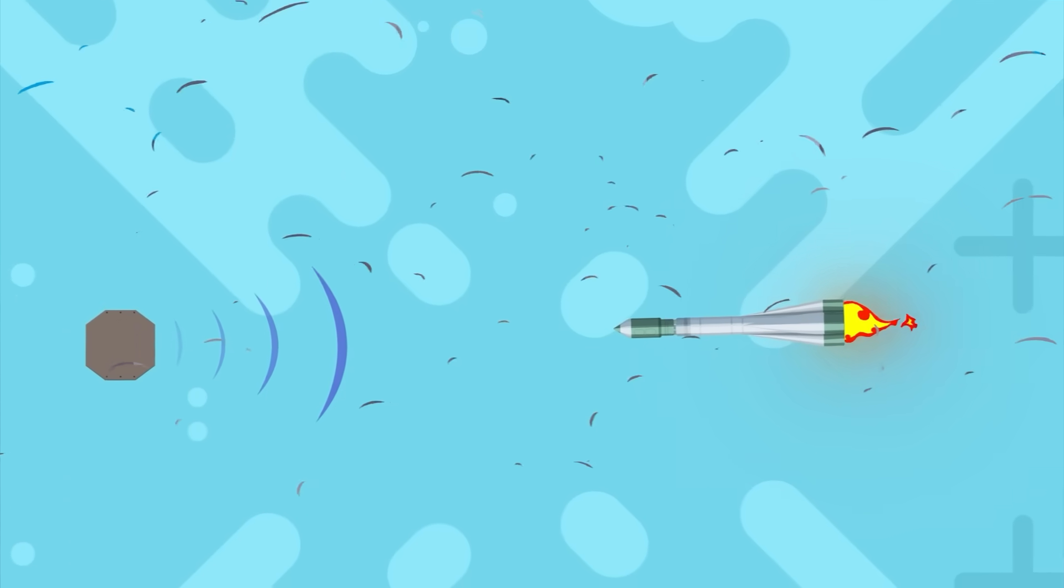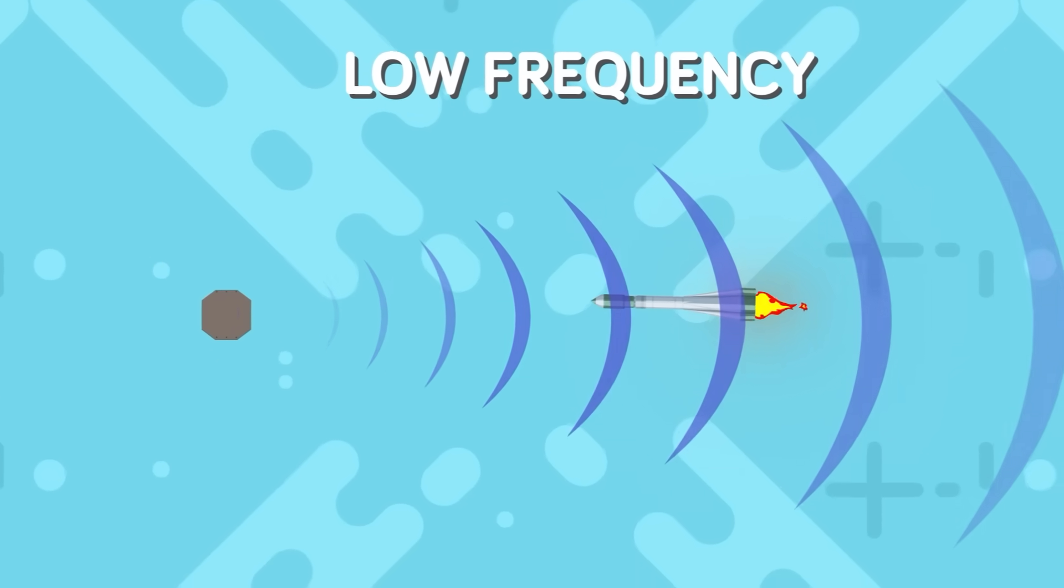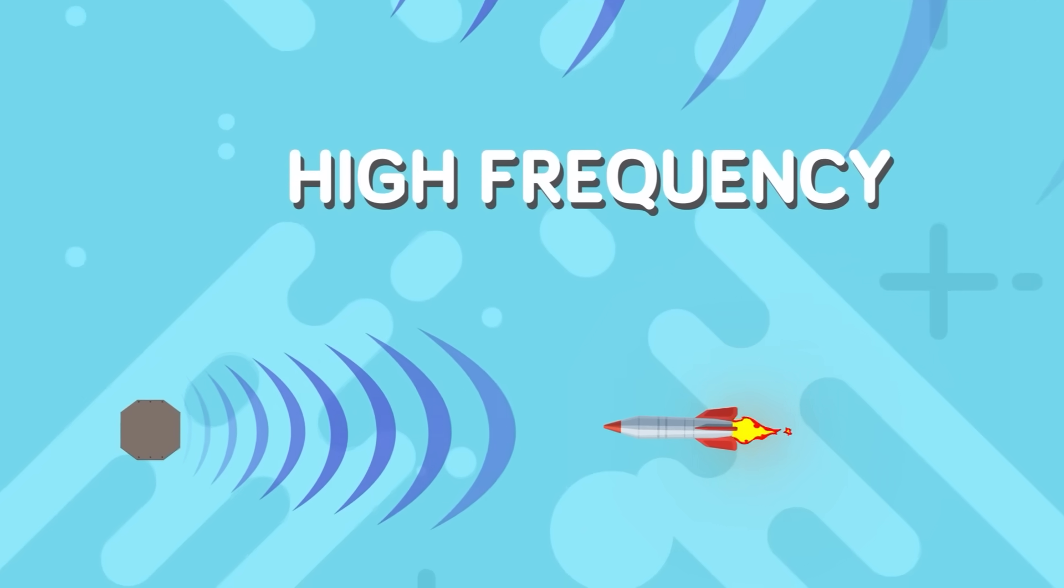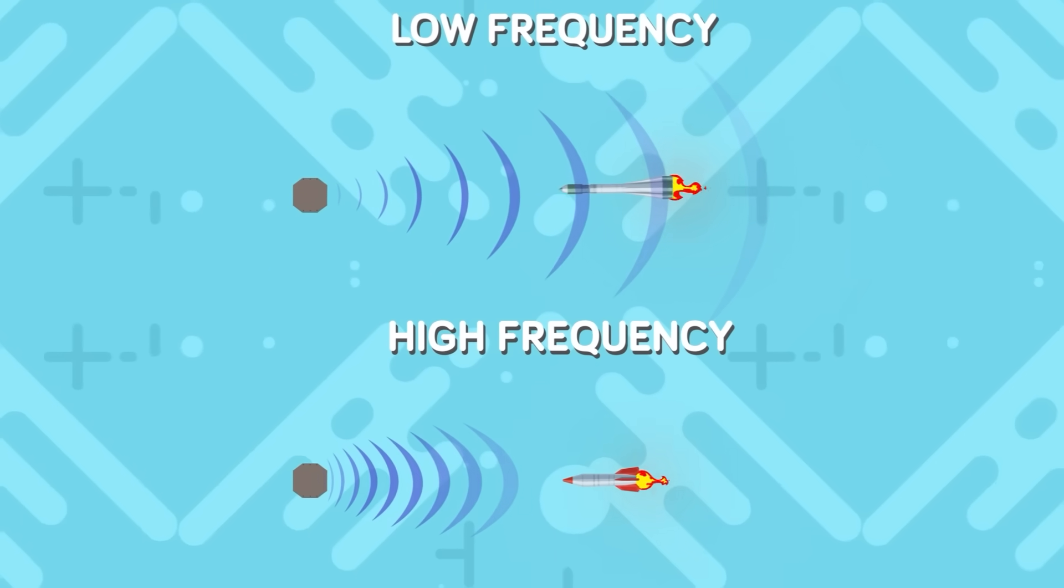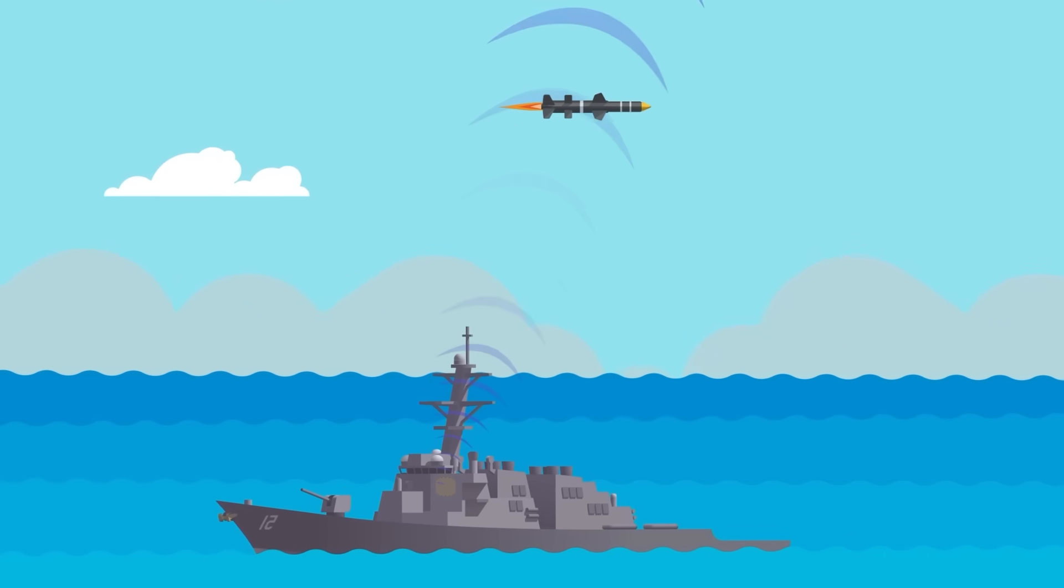Choosing the right frequency is essential to BMD missions. If you choose a frequency that is too low, you will not get enough fidelity to get a coherent and accurate track. If you select a frequency that is too high, then the range on the radar suffers greatly. Through decades of testing and development, the US has perfected the frequency range for air defense radars.